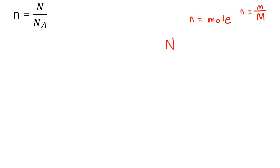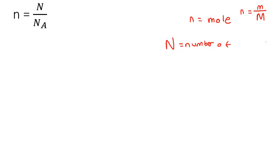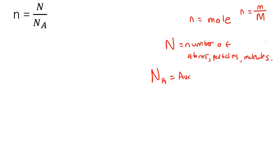The capital N stands for number of atoms, particles, or molecules, depending on what we are looking at. And then Nₐ — there's a little subscript A — this stands for Avogadro's number. Avogadro was a scientist.